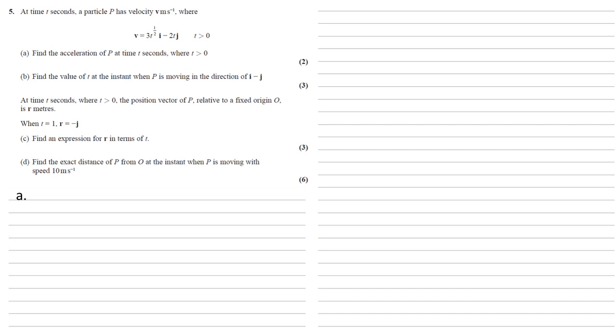For part a, we need to find the acceleration of p at time t seconds, where t is larger than zero. So we've been given the velocity. The acceleration is the differential of velocity with respect to time, so we're going to differentiate 3t to the half minus 2t.